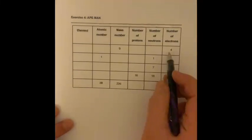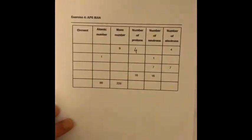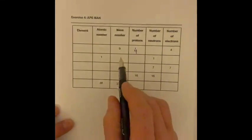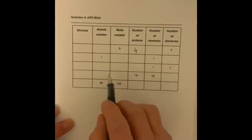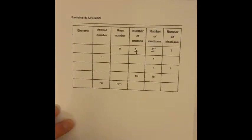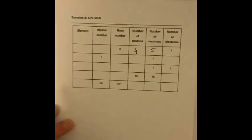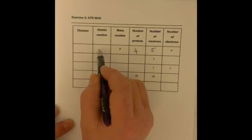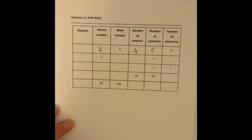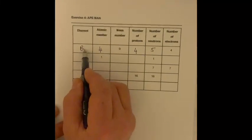We've got 4 electrons. 4 electrons means we must have, because it's an atom, 4 protons. If we've got a mass number of 9 and 4 protons, we must have 5 neutrons. The number of protons is always the same as the atomic number, so therefore the atomic number has got to be 4. That means we can look on a periodic table and see element number 4 is going to be beryllium.